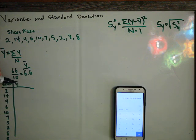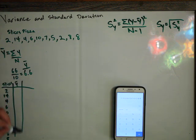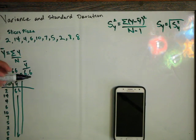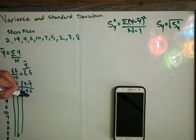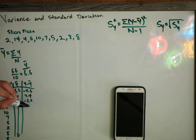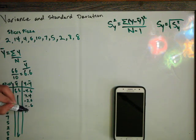So y bar is 6.6. Y minus y bar is 2 minus 6.6 is negative 4.6, 14 minus 6.6 is 7.4, 4 minus 6.6 is negative 2.6, 6 minus 6.6 is negative 0.6, 10 minus 6.6 is 3.4.